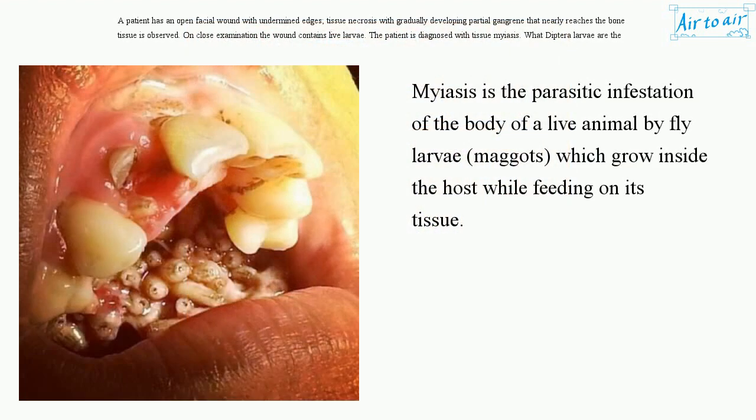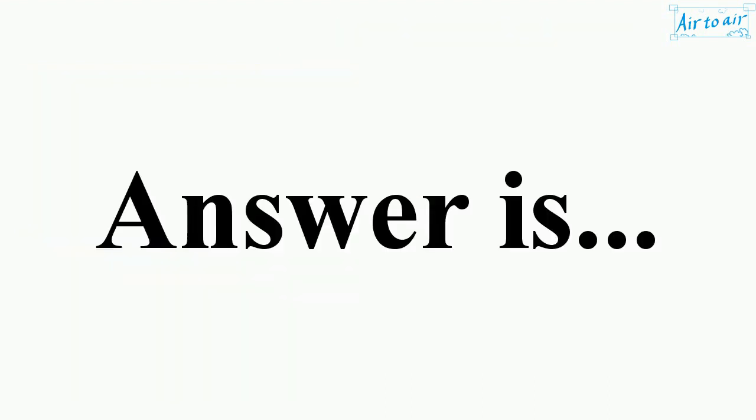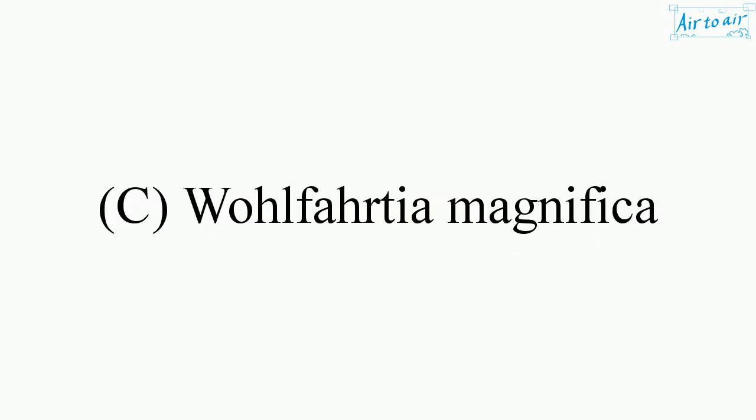Myiasis is the parasitic infestation of the body of a live animal by fly larvae (maggots), which grow inside the host while feeding on its tissue. The answer is C. Wohlfahrtia magnifica.